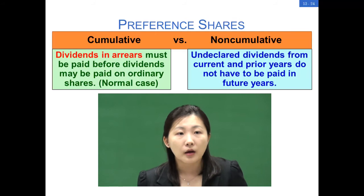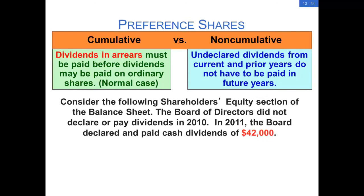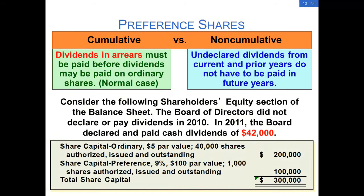Let's take a look at this example to understand the concept. This company has both ordinary shares and preference shares. The directors did not declare a dividend in 2010. In 2011, the directors declared and paid cash dividends of $42,000 in total. Let's see how this dividend is distributed when the preference shares are cumulative and when they are non-cumulative.